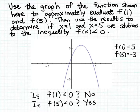So to summarize, x equal 1 is not a solution to the inequality, but x equal 5 is a solution to the inequality.